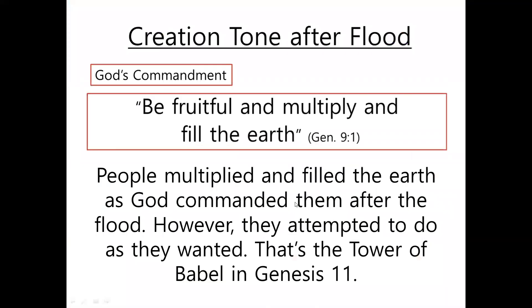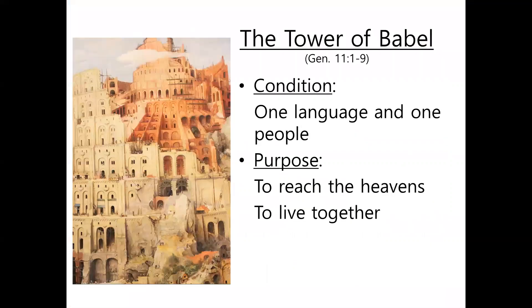However, people multiplied and filled the earth as God commanded them after the flood. But then they attempted to do as they wanted. That's the Tower of Babel in Genesis chapter 11. The Bible tells us the condition was one language — they used one language and were one people. And their purpose in building the Tower of Babel was to reach the heavens and to live together, not scattered on earth.